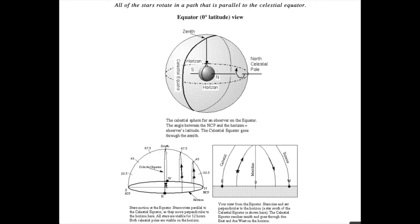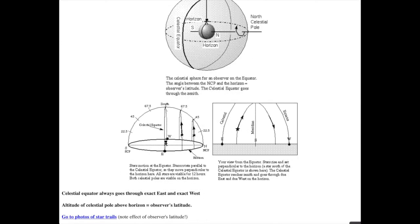Now we're at the equator with a latitude of 0 degrees. The north and south celestial poles are on the horizon, and the celestial equator arc goes through the zenith point. The stars rise straight up from the horizon and set straight down because that's what the celestial equator arc does. Only at the equator do they make perpendicular paths with respect to the horizon — at all other latitudes, they rise at an angle. There are no circumpolar stars as seen from the equator. In all of the locations, the celestial equator always goes through the exact east and exact west points on the horizon, and the altitude of the north celestial pole equals the observer's latitude.